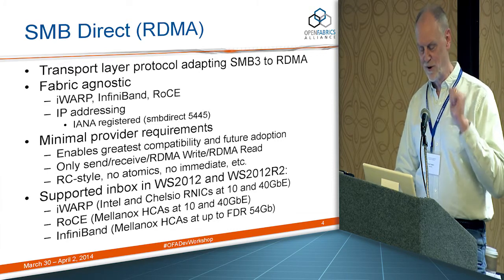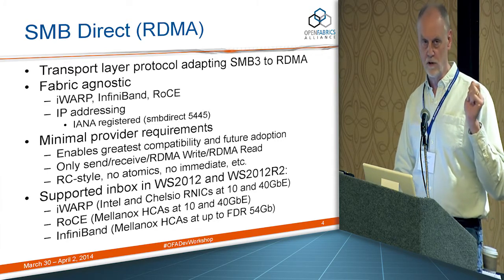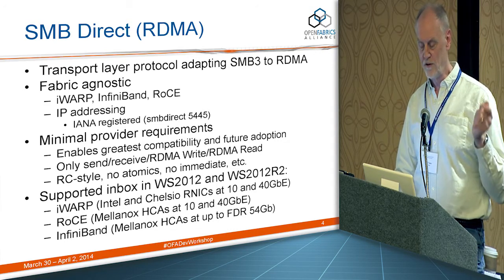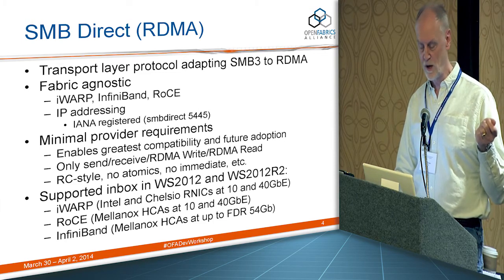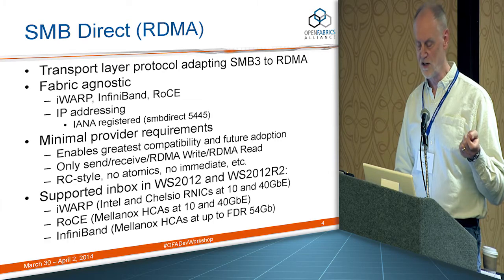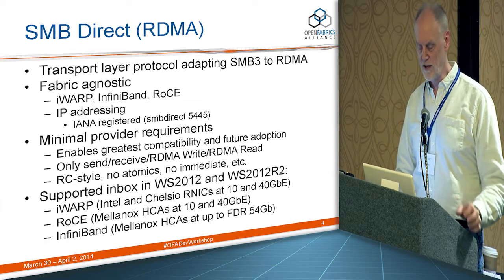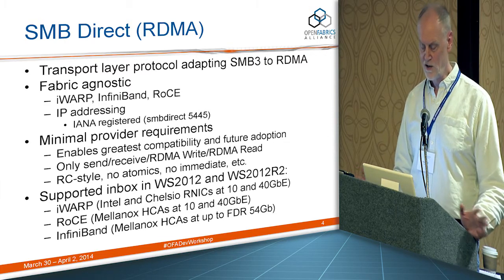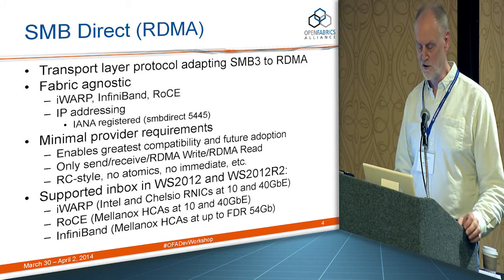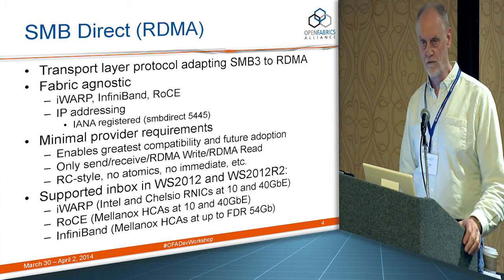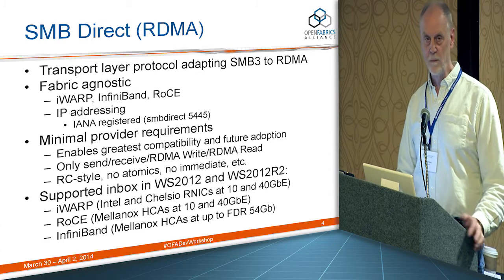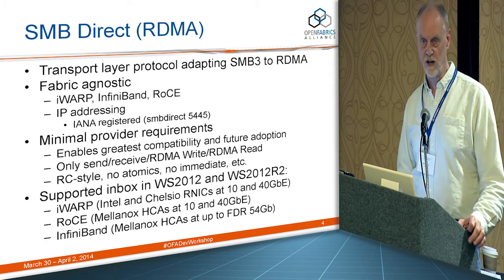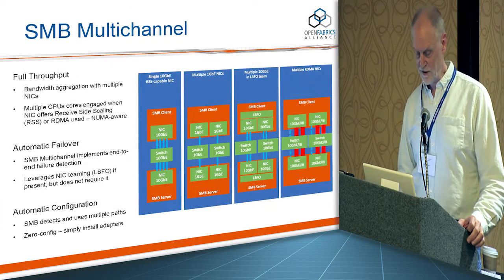In the box we support three different fabric-agnostic transports. IWARP in the form of the Intel NetEffect NE020 and the Chelsio T4 and T5 series at 10 and 40 gigabits depending on the model. RoCE — Mellanox HCAs, ConnectX-2 and ConnectX-3 — are both supported in Windows, and depending on the generation, at 10 and 40 gigabits over Ethernet. And finally InfiniBand — QDR and FDR — up to 54 gigabits of effective throughput. And we make full use of them, as I'm going to try to show you.